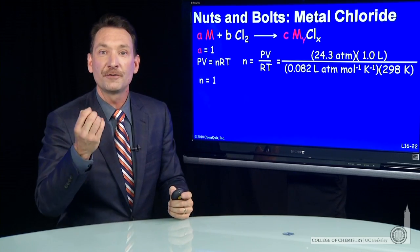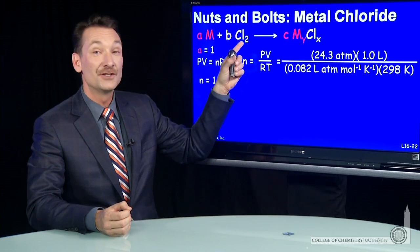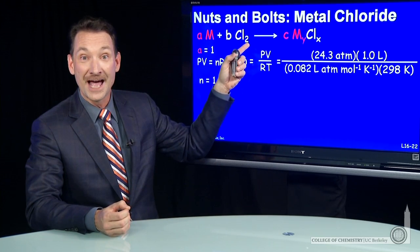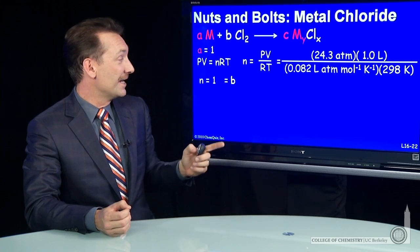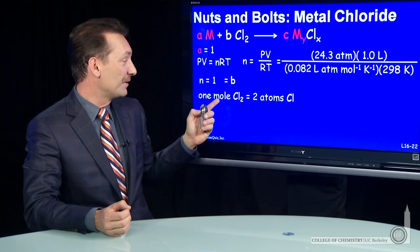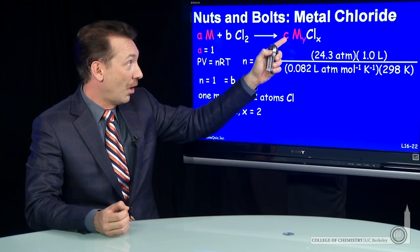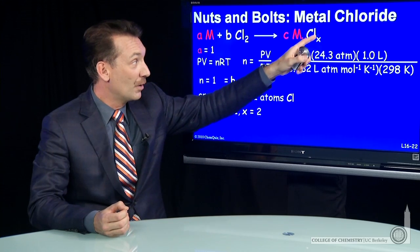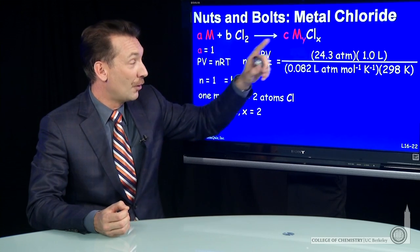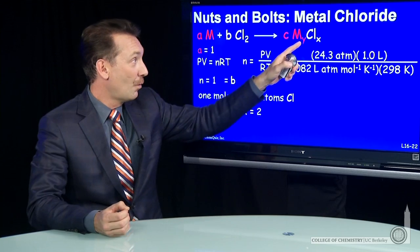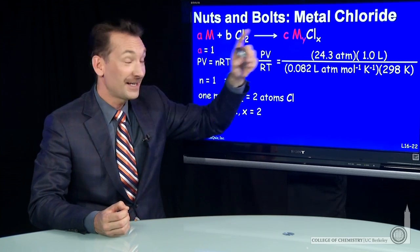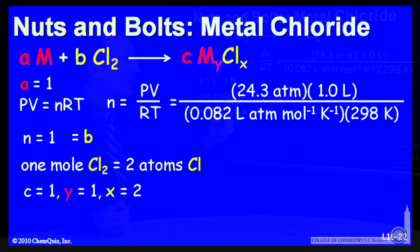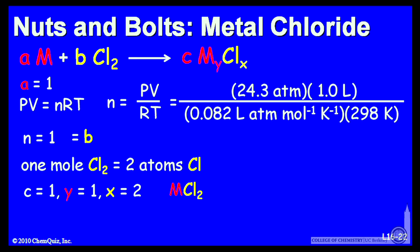One mole of chlorine gas reacting with one mole of metal. Now we have to remember a mole of chlorine gas is two moles of chlorine atoms. So the actual coefficient is 1. I have one mole of metal with two moles of chlorine atoms. So Y is 1, X is 2. The relationship is MCl2.